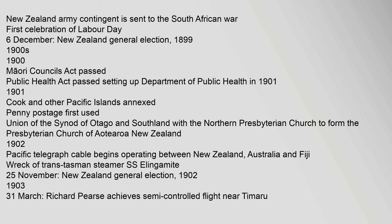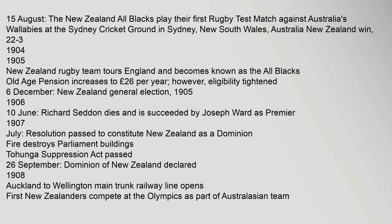1899–1900s: Maori Councils Act passed. Public Health Act passed, setting up Department of Public Health in 1901. 1901: Cook and other Pacific Islands annexed. Penny postage first used. Union of the Synod of Otago and Southland with the Northern Presbyterian Church to form the Presbyterian Church of Aotearoa New Zealand. 1902: Pacific Telegraph Cable begins operating between New Zealand, Australia and Fiji. Wreck of trans-Tasman steamer SS Elingamite. 1903, 31 March: Richard Pearse achieves semi-controlled flight near Timaru.